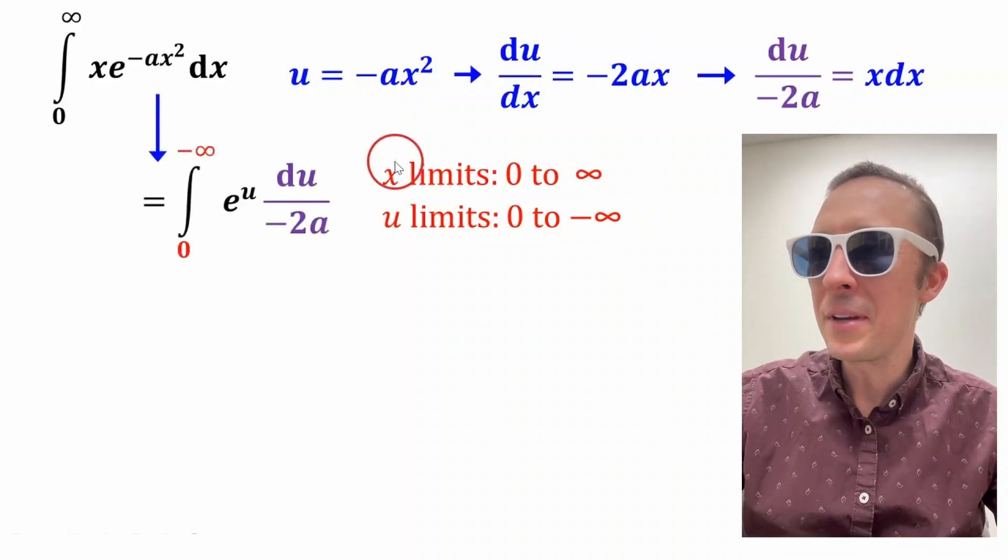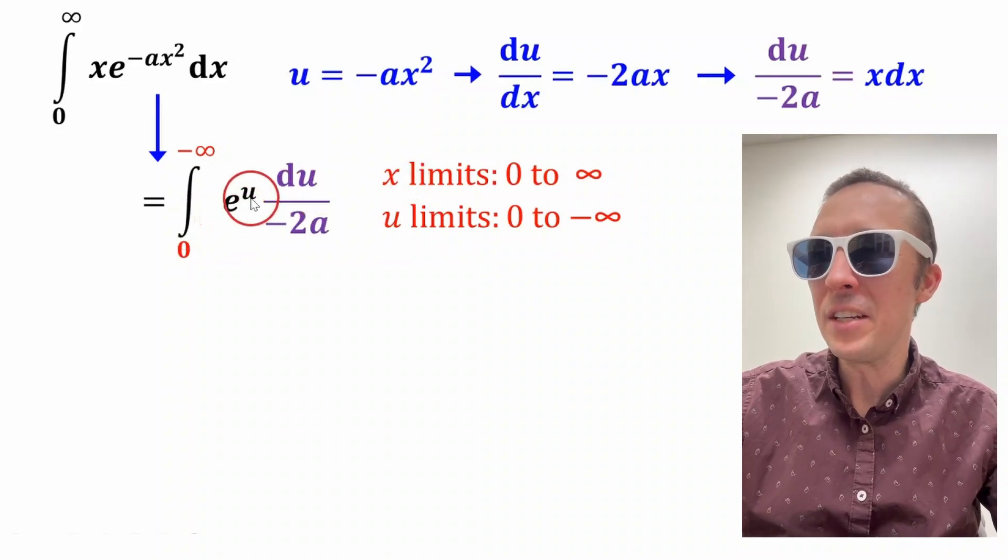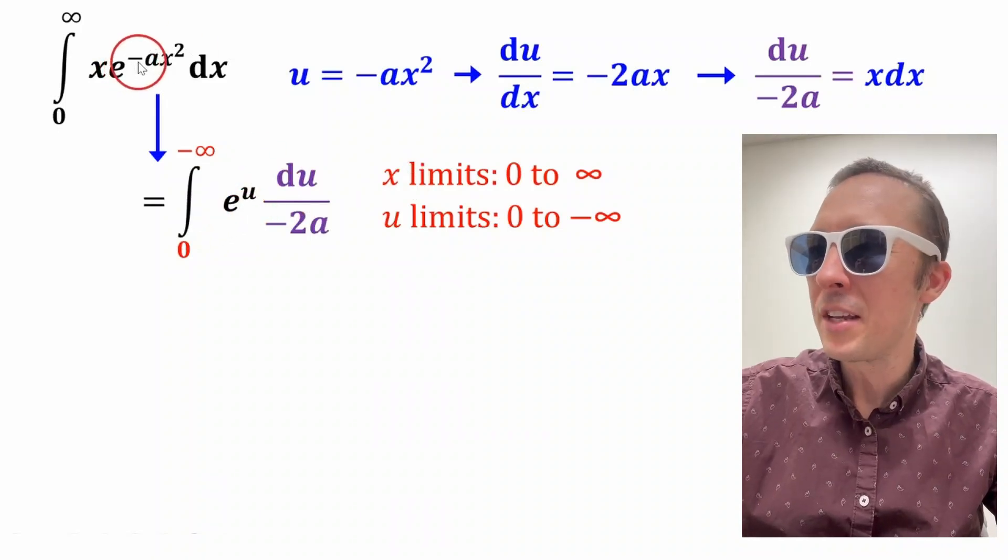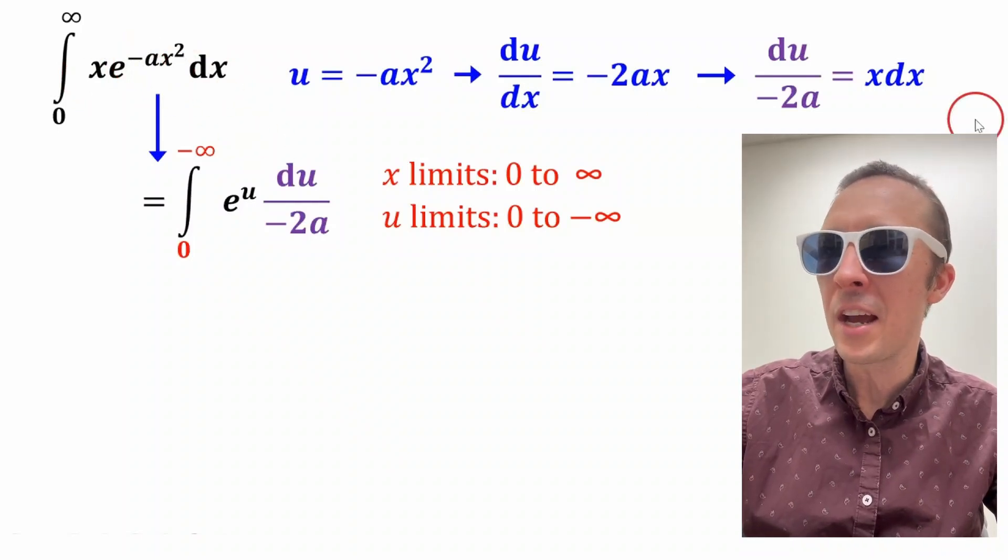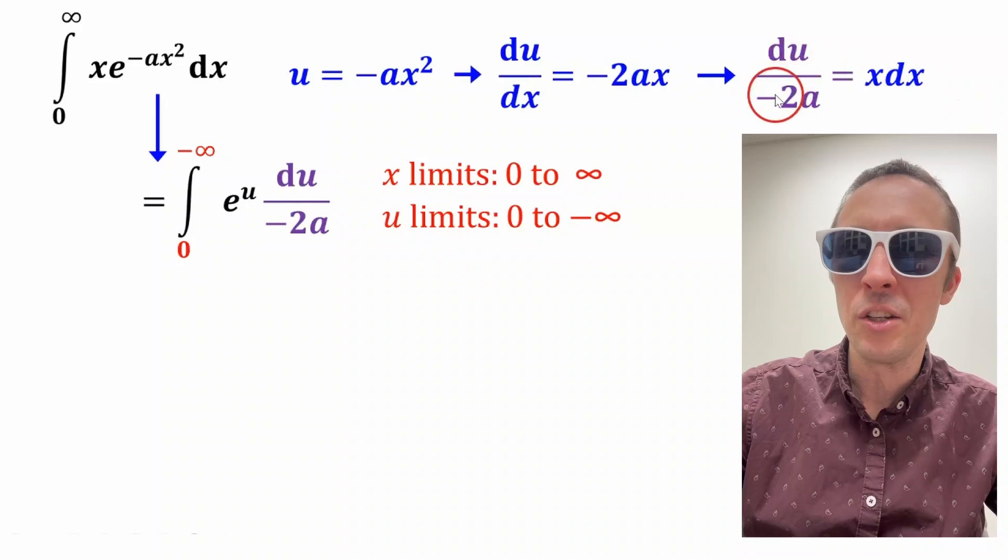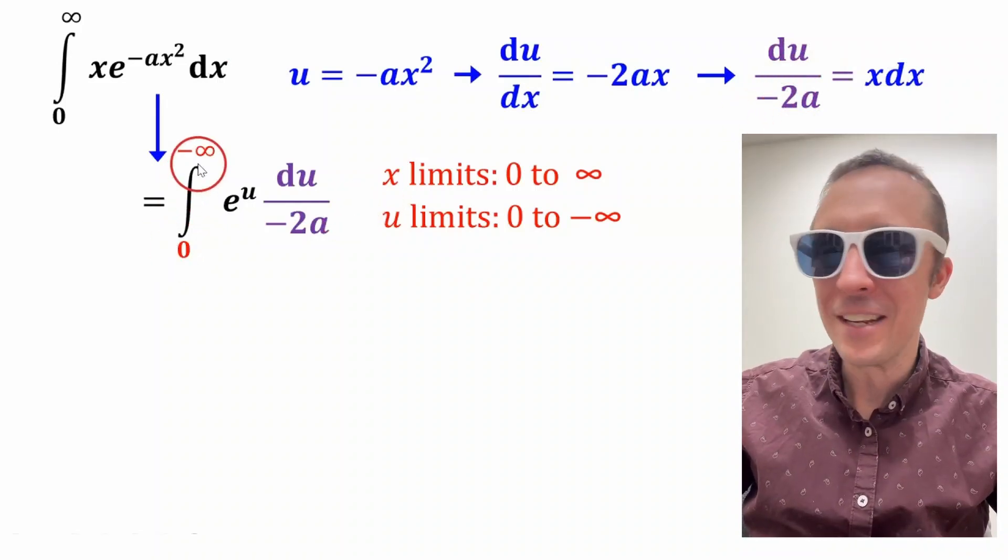So with those limits in here, we'll plug that in. We now have the integral of e to the u, because that's what u is. u is negative ax squared, and then instead of x dx, we substitute in this du over negative 2a. We have our new limits from zero to negative infinity.